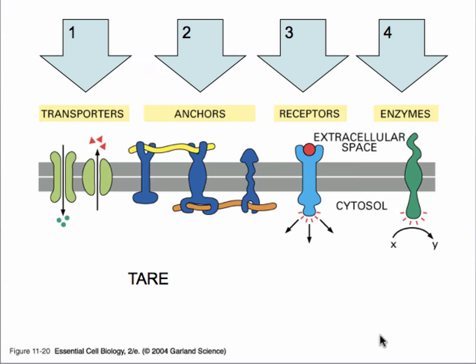Proteins can be classified into four types. Transporter proteins do exactly what the word says — they move material in and out of the cell. In order to move material in and out of the cell, the protein has to be in a configuration that is considered open.